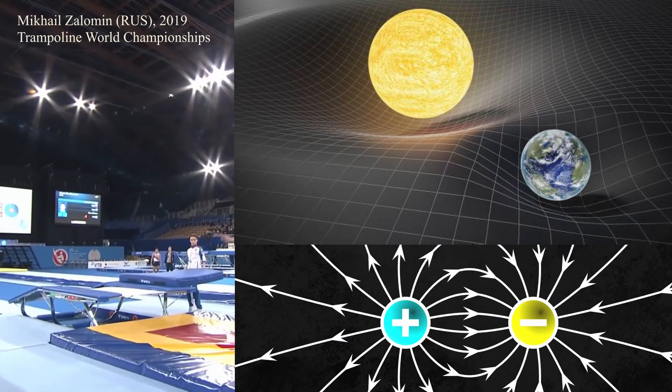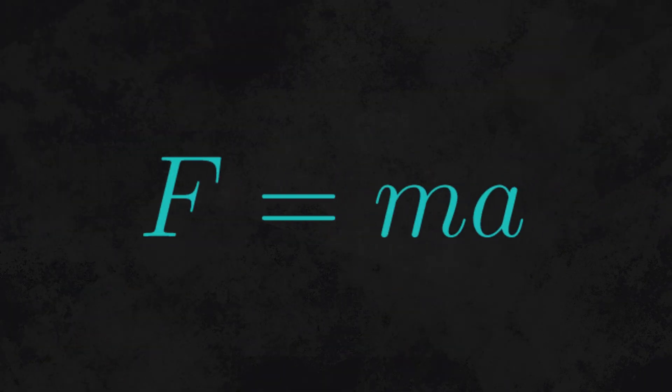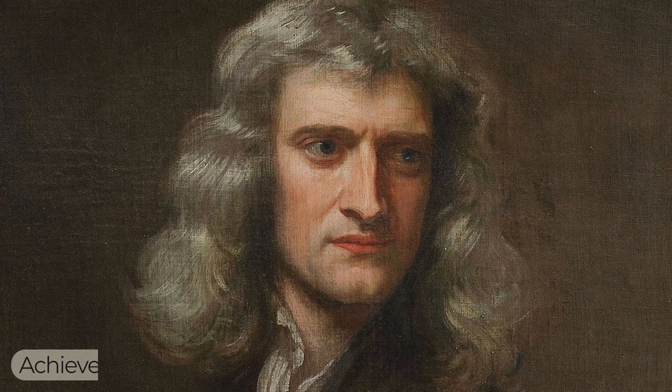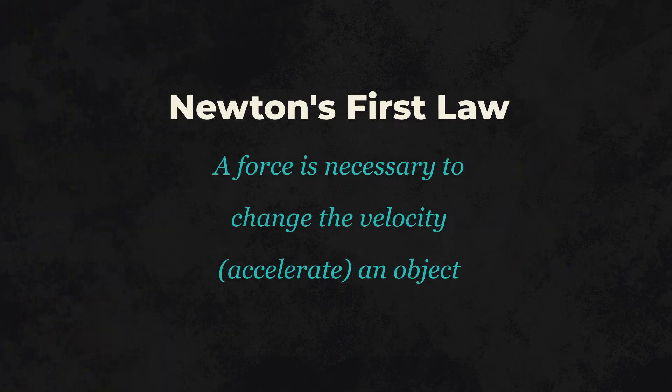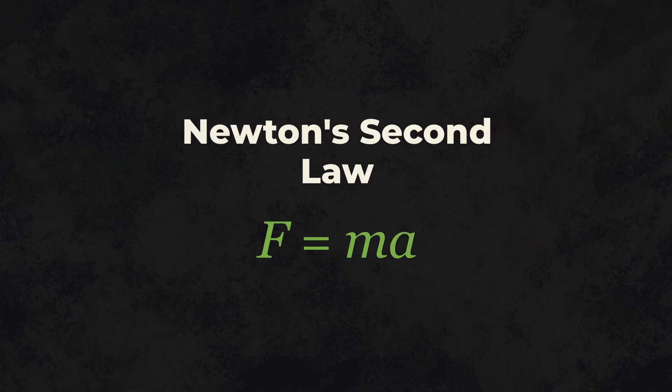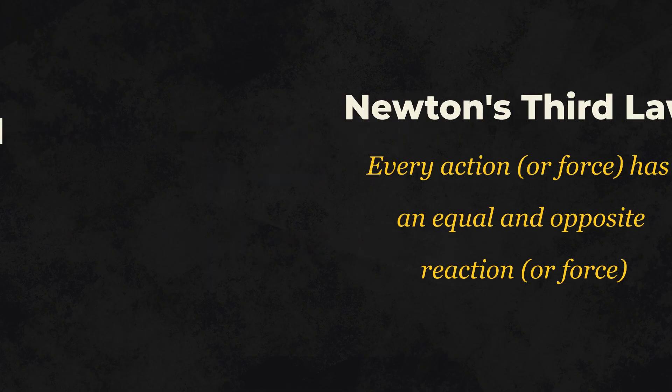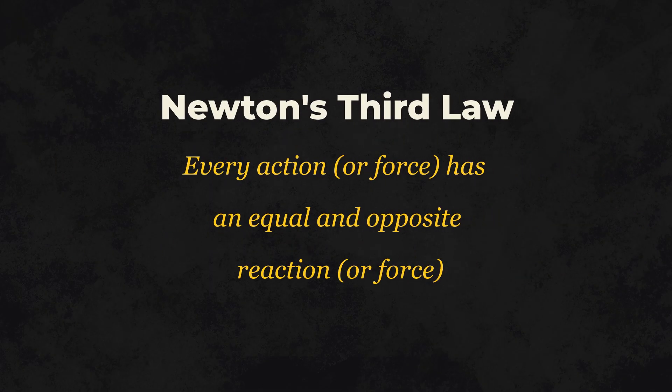In summary, force can be applied on an object by pushing it, or by gravity or electricity. The equation for force is F equals ma, where m is mass and a is acceleration. Newton's laws govern how force works. The first law states that force is necessary to change the speed of an object, whether the speed is zero or something else. Newton's second law defines force as being proportional to mass and acceleration, or more simply, F equals ma. Finally, Newton's third law states that every force, or action, has an equal and opposite force, or reaction.